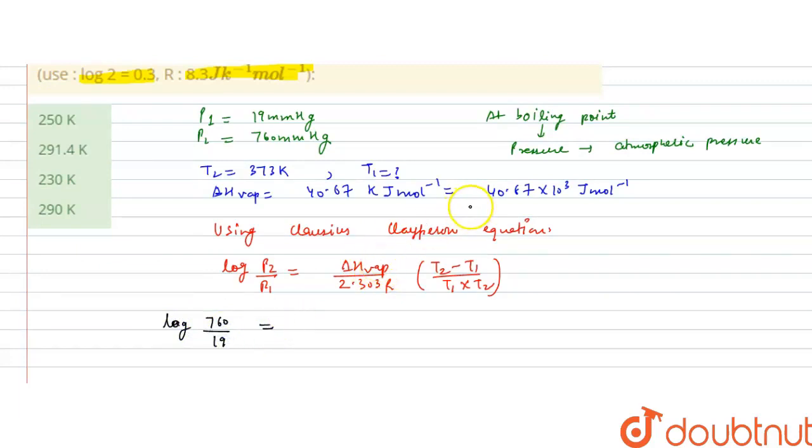And delta H vaporization is 40.67 into 10 raised to the power 3, so it will be 40,670 in Joule per mole, divided by 2.303 into R that is 8.3 Joule per Kelvin per mole.